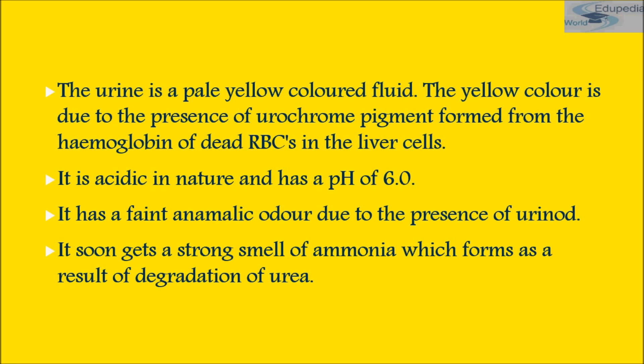The normal constituents of urine have two categories. First is organic constituents and second is inorganic constituents. Organic constituents are urea, uric acid, creatinine, and vitamin C. Inorganic constituents are water, NaCl, calcium, and ammonia. Ammonia is present in traces.